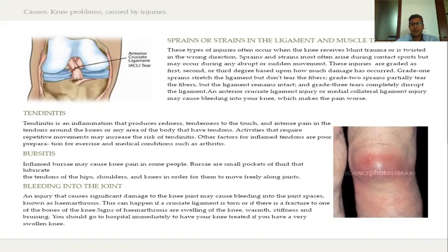Tendonitis is another common problem. It is a condition which causes inflammation that produces redness, tenderness to touch, and intense pain in the tendons around the knee or any area of the body with tendons. Activities that require repetitive movements increase the risk of tendonitis. Inflamed tendons can also result from poor preparation for exercise, arthritis, or increased uric acid levels which can lead to gout. Tendonitis pain is localized — either on the inside, outside, or above the knee.